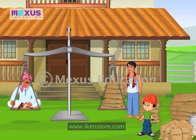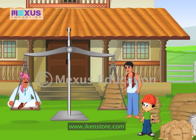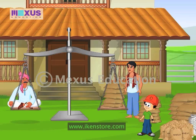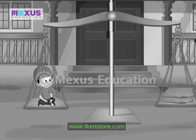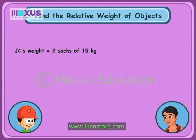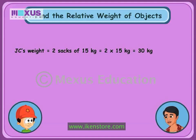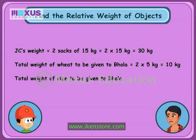Thanks for all your help, Bhola. You must be awarded with rice and wheat too. Please allow me to sit on the pan. Okay, J.C., you can sit on the pan. Bhola will get wheat and rice equal to your weight. My weight is equal to 2 sacks of 15 kilograms, that is 2 multiplied by 15 kilograms, that is 30 kilograms. Bhola, you will get wheat weighing 2 sacks multiplied by 5 kilograms, that is 10 kilograms, and rice weighing 2 sacks multiplied by 10 kilograms, that is 20 kilograms.